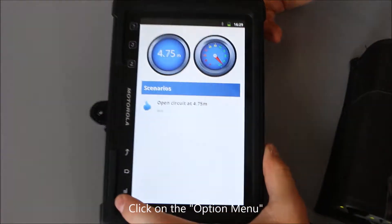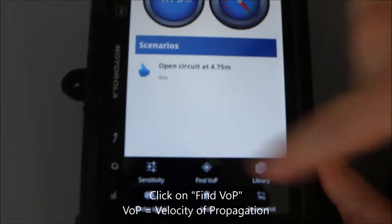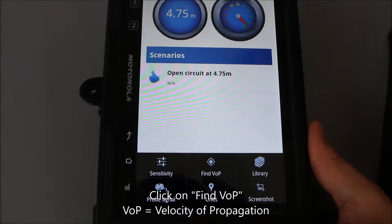You go in option menu and you click on find VOP, velocity of propagation.